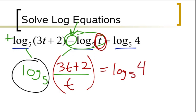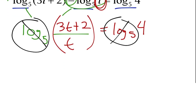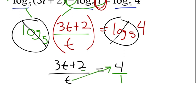That's equal to log base 5 of 4. Now, at this step, I can look at the fact that they're both the same log and get rid of those logs, and I'm just left with 3t plus 2 over t equals 4. Which means I can put this over a 1, and I can cross multiply, the 4 and the t, and then the 3t plus 2 times the 1, which means I should get 3t plus 2 equals 4t.